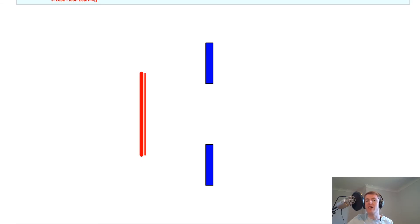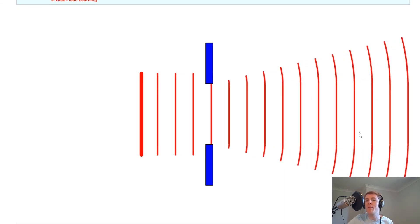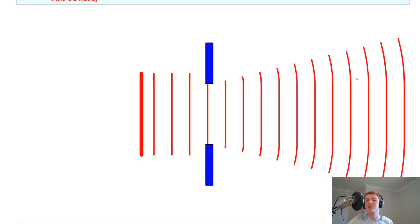So in this case, we've got a large gap size. And if I play that, you'll see that the waves are bending through the gap, the large gap, but they're not bending by a massive amount. There's just a small amount of bending happening at the end, a small amount of diffraction.